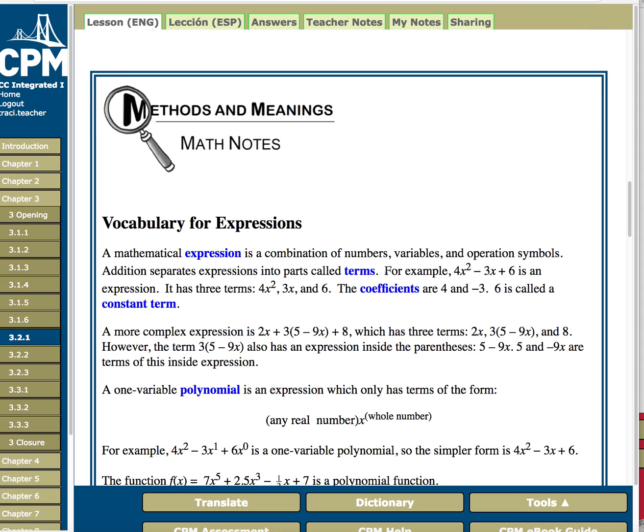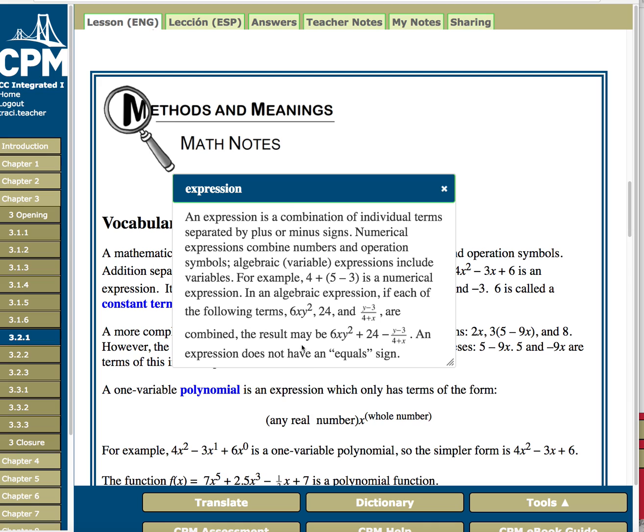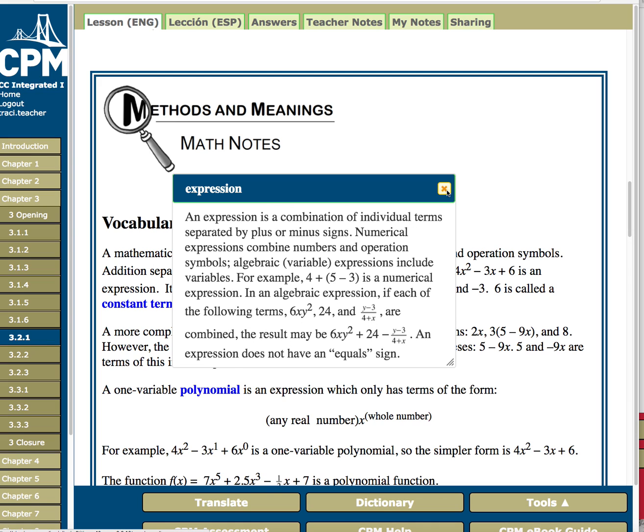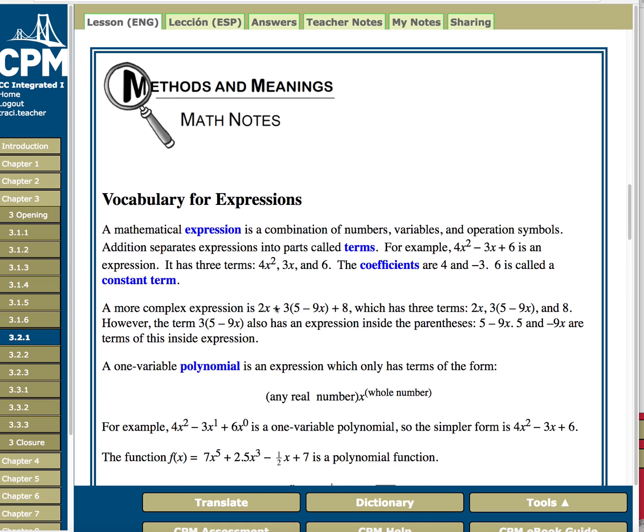And if you notice, some of the words are in blue. Anytime a word is in blue, you can click on it. It's a vocabulary word. And if you click on it, it will often give you a definition and some examples. So anytime you see a word in blue, you can click on it.